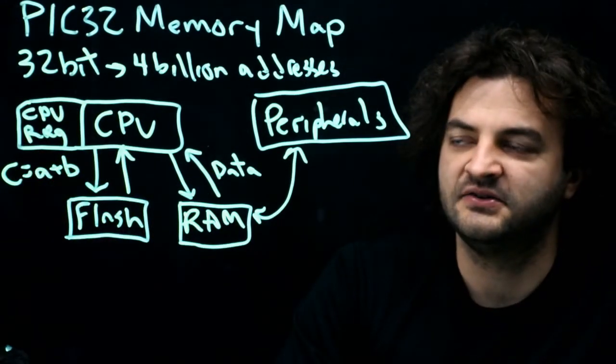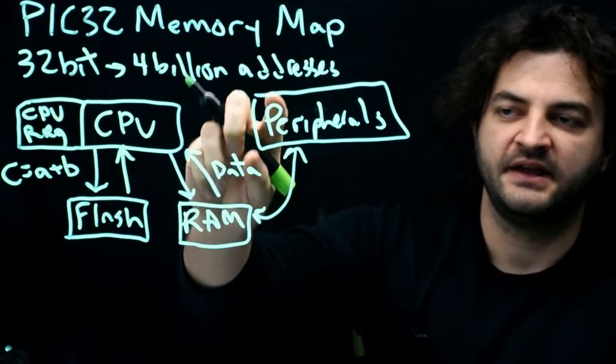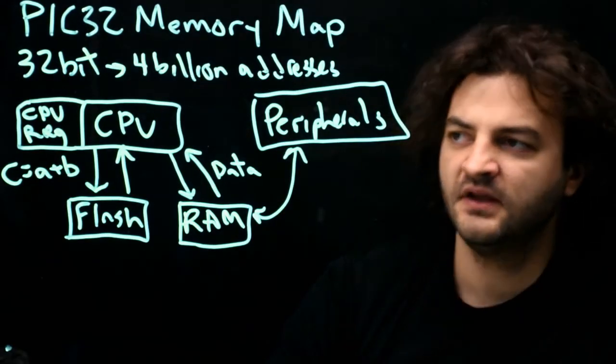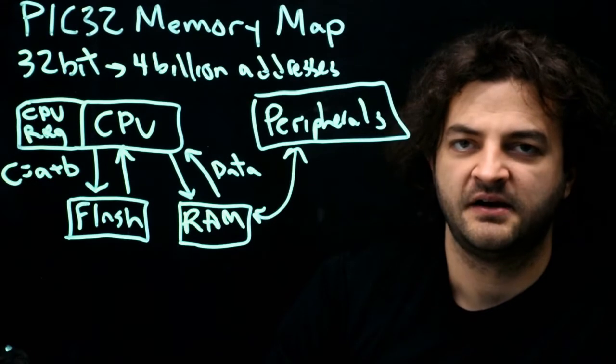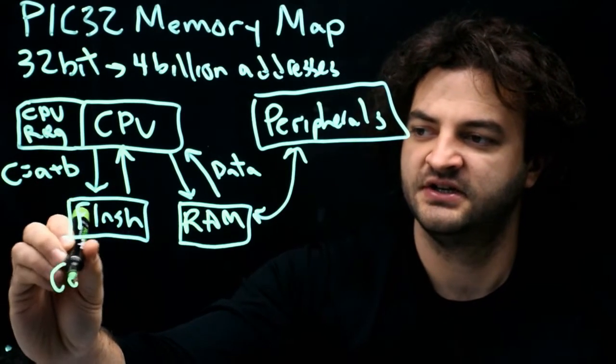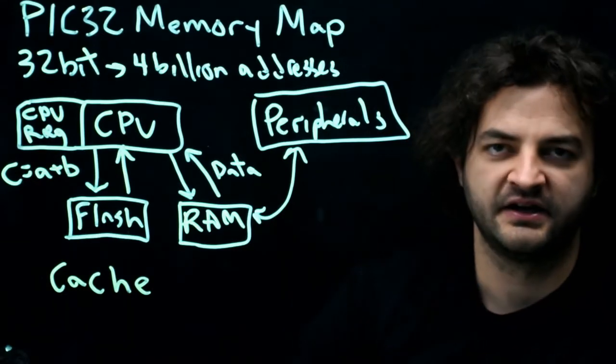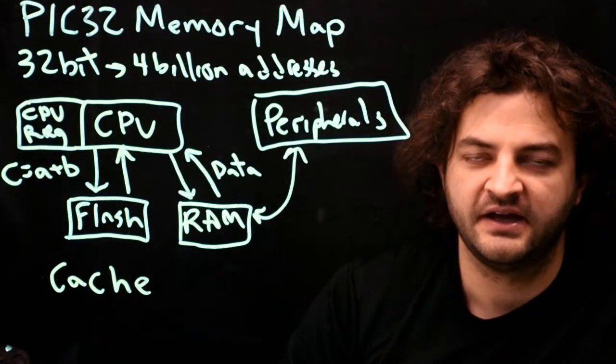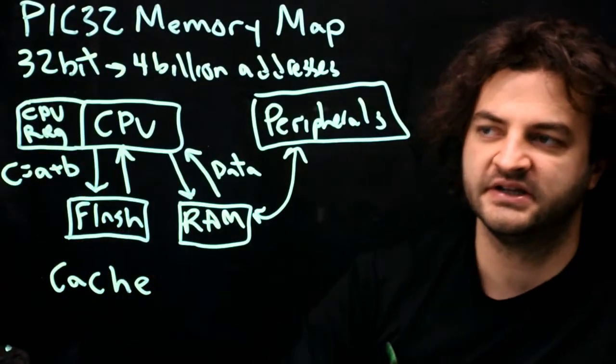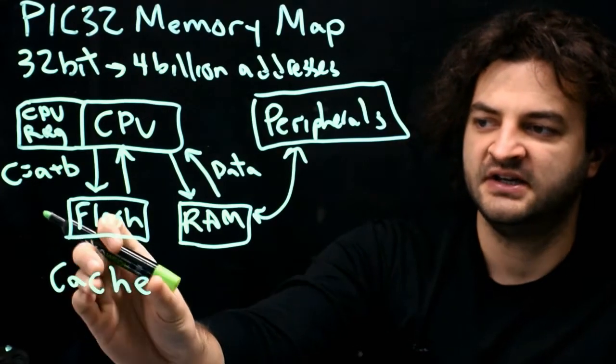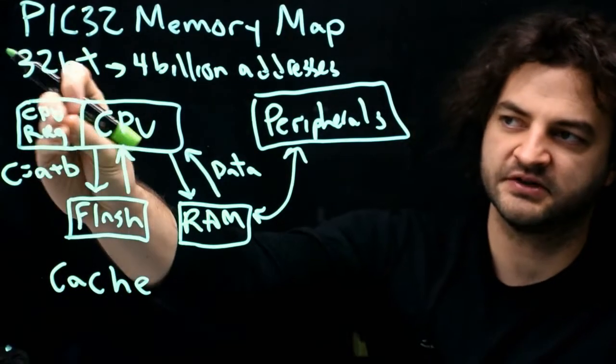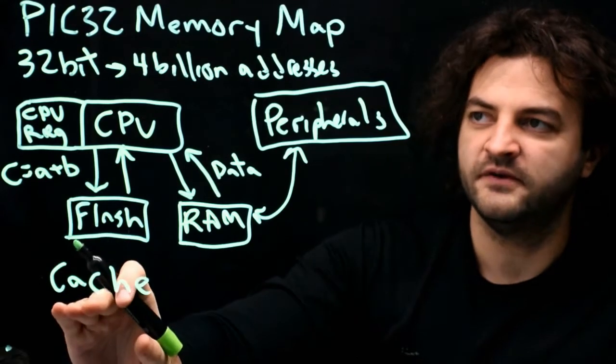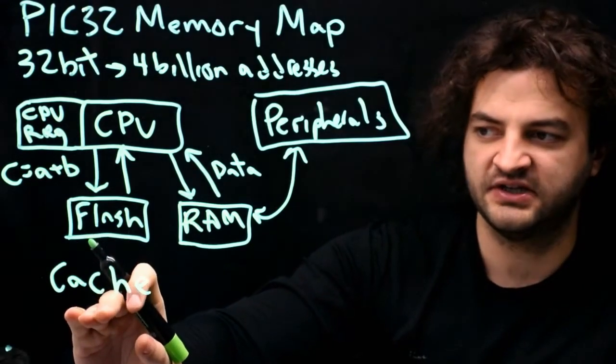So somehow I need to specify that a variable that I declared should not be stored in this CPU register. So this ability to save things inside of CPU registers, this is called the cache. So you might have heard this when you're buying a microprocessor for your computer, how big is the cache? Usually a bigger cache means everything can run faster because more data can be stored locally in the CPU. So our PIC has a very small amount of cache. That's a subset of the CPU registers because there are other registers within the CPU that do other things.